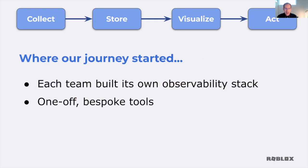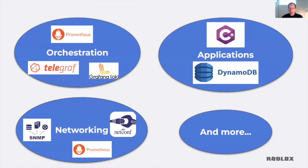Let me talk about where our observability journey started. In the beginning, each team took responsibility to build its own observability stack. A lot of teams saw their own needs and came up with a one-off custom solution that would just cover what their team needed. As a result, as you look across the organization, there was a zoo of different technologies in use — this is just a subset of the ones that we have. For instance, there are teams that use traditional Prometheus Grafana stacks. Our application team had a custom metrics infrastructure built using a C# library they wrote, storing data in DynamoDB for their time series DB.